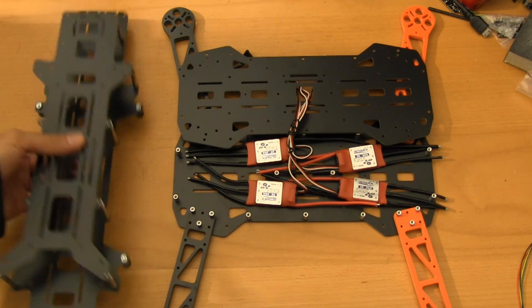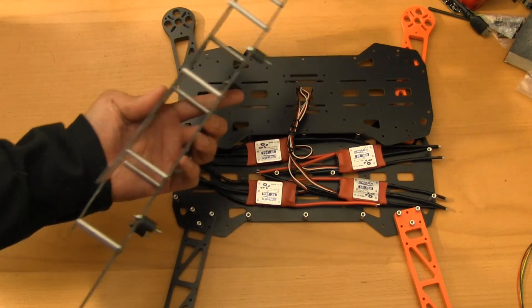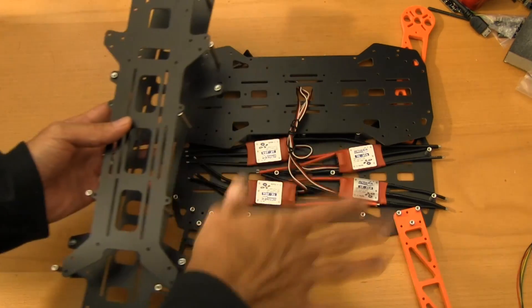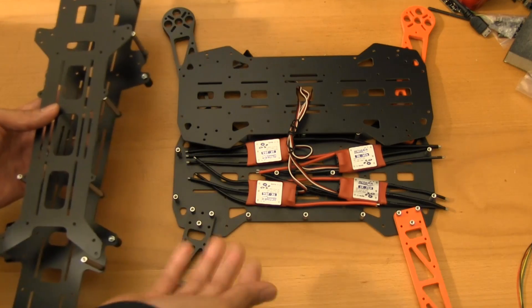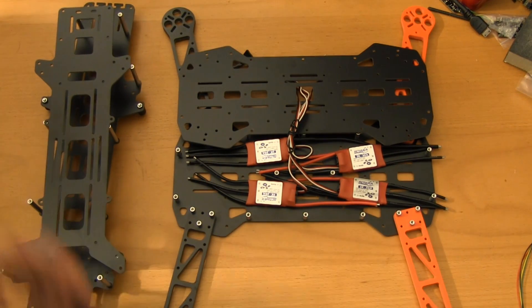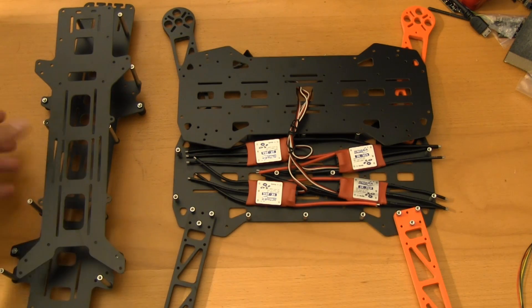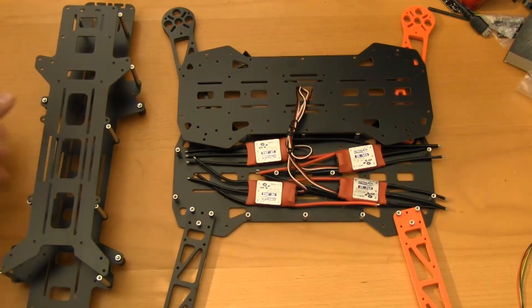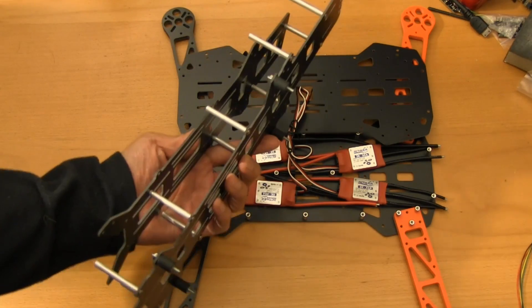Quite simply, it's just a method for isolating one section of the multirotor from the part that generates all the vibrations, which is naturally the section that has all the motors. So you have the dirty plate - that's everything connected to the motors - and then the clean plate section.